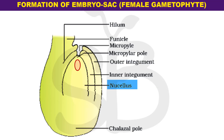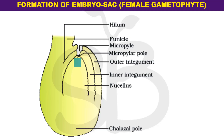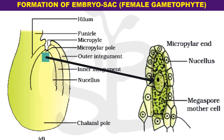This is a large dense cell called the embryo sac, which is a female gametophyte form. This is the mega spore mother cell.